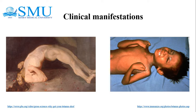Autonomic disturbance is maximal during the second week of severe tetanus, characterized by low or high blood pressure, tachycardia, intestinal stasis, sweating, increased tracheal secretion, and acute renal failure.